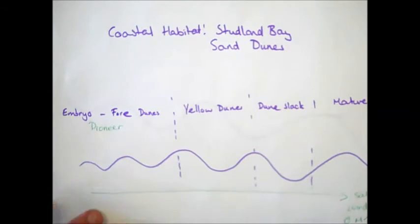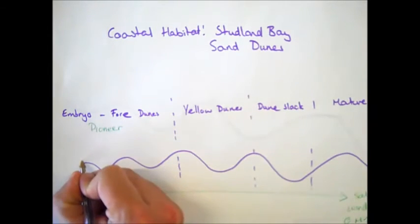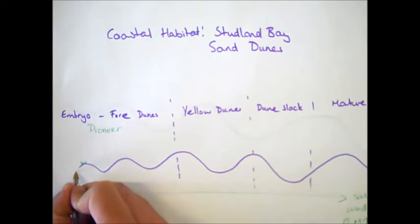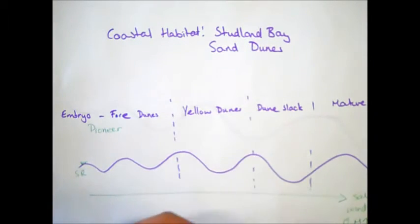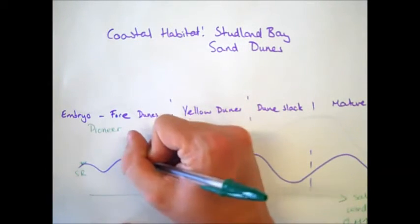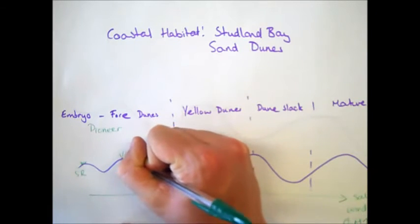These are going to be plants that are adapted to growing in very high salt conditions in the soil, don't mind enjoying very strong winds, and don't need very good soil to survive in. The kind of plants that survive in these embryo and foredunes are things such as sea rocket, and probably the most common one is marram grass.